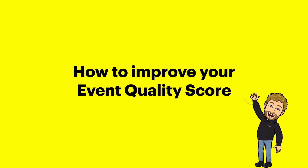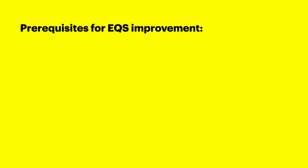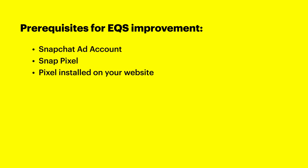Hey, I'm David Casey, a Solutions Engineer at Snap. Today we're going to go over how to improve your event quality score to help get better results for your business. Before we get started, let's cover a few prerequisites. This tutorial assumes that you've created a Snapchat ad account and that you've created a Snap Pixel and installed it on your website. If you still need to set up an ad account or pixel, please follow the instructions in our Business Help Center and then come back to this video.